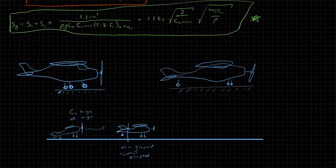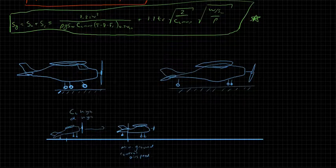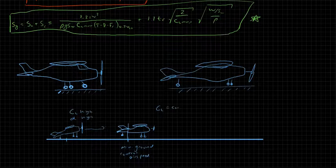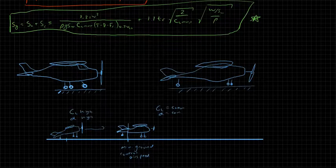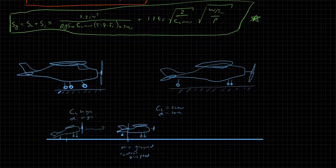So this velocity at which you can finally get control that way is called the minimum ground control airspeed. So we start at a high lift coefficient, high angle of attack, until we get to the minimum ground control airspeed, at which time our lift coefficient becomes constant, and our angle of attack is constant, at this attitude here.